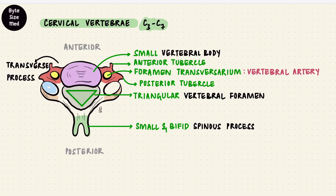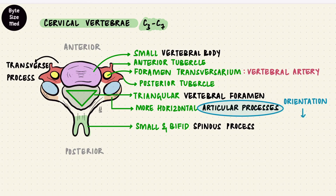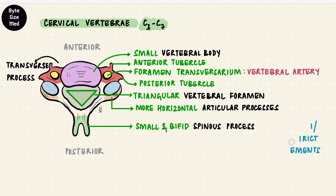The last set of processes are the articular ones. They are more horizontal in their orientation. This is important for movement — the way these processes articulate with each other can permit or restrict movements in that region of the vertebral column. We'll look at movements when we look at the vertebral column as a whole. But those are some of the special things about cervical vertebrae.